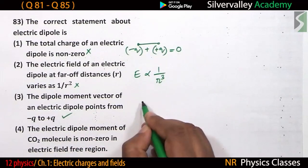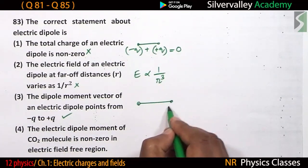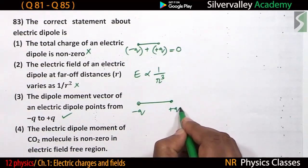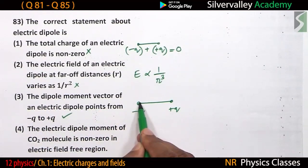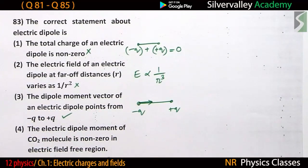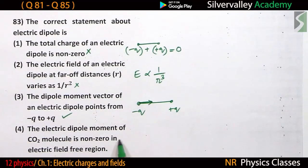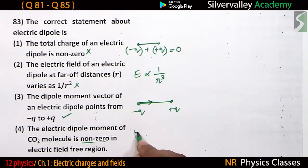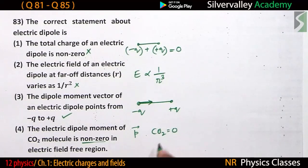Third statement: 'The dipole moment vector of an electric dipole points from minus Q to plus Q.' Yes — with charges minus Q and plus Q, the direction of the dipole moment is from minus Q to plus Q, so this is correct. Fourth: 'The electric dipole moment of a carbon dioxide molecule is non-zero in an electric-field-free region.' Actually, the dipole moment of CO₂ is zero. Therefore the third statement is the correct one.